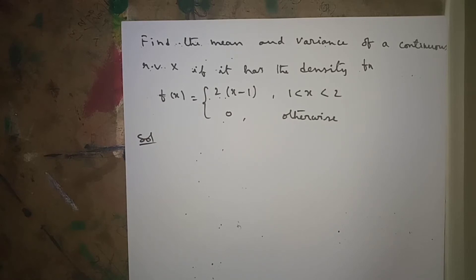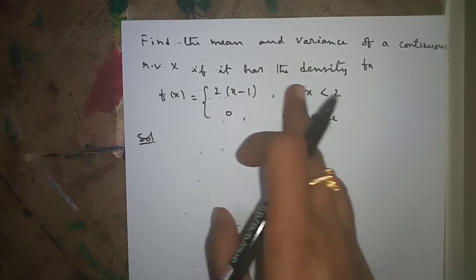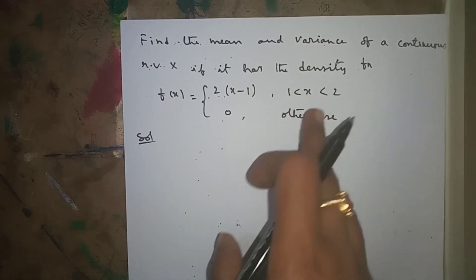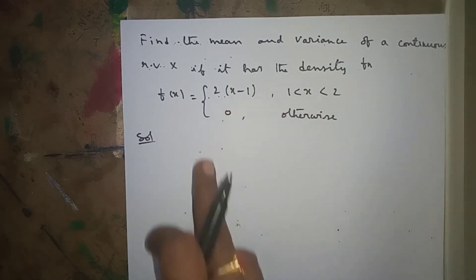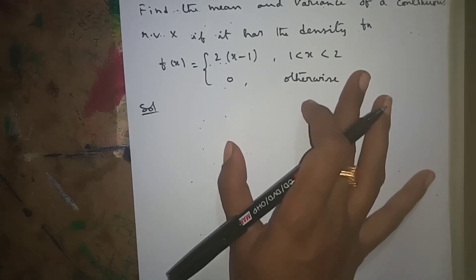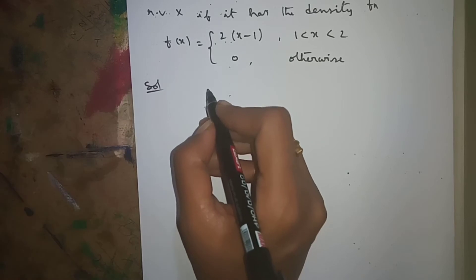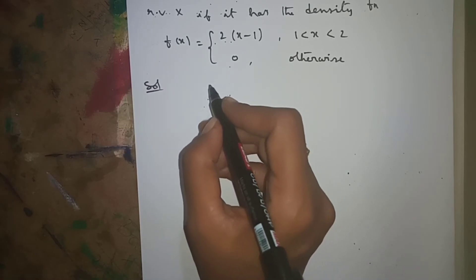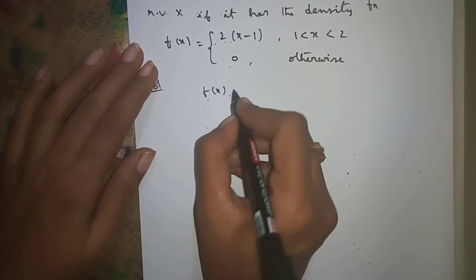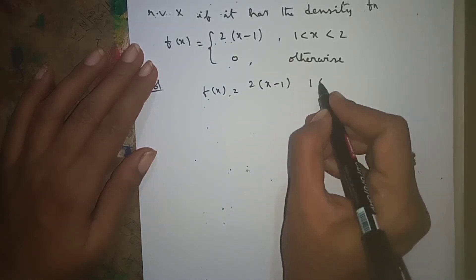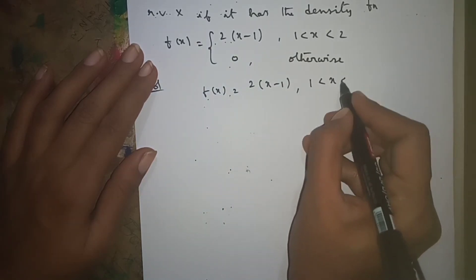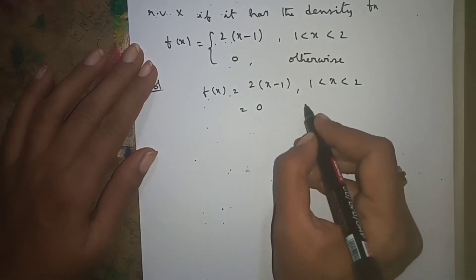Next problem: Find the mean and variance of the continuous random variable x if it has the density function f(x) = 2(x−1) for x between 1 and 2, and 0 otherwise. We will find mean and variance in the same manner as the previous problem.